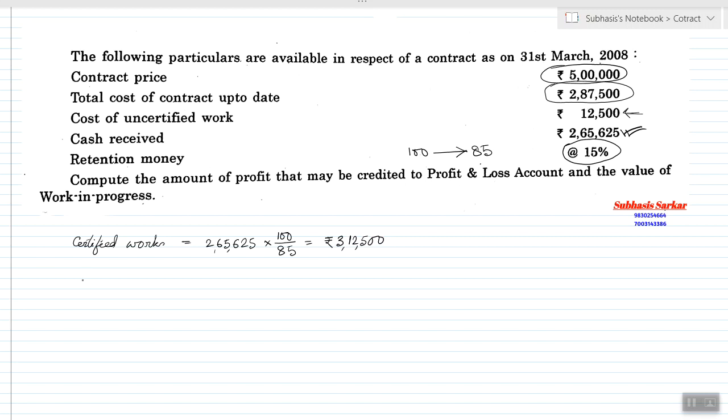Now, Percentage of Work Completed. Percentage of Work Completed equals Certified Work by Contract Price.